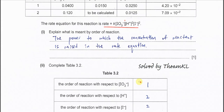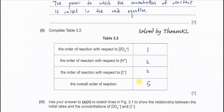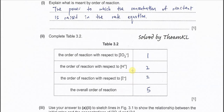Complete table 3.2: the order for iodate is first order, H⁺ is second order, and iodide is second order. The total overall order is 1 + 2 + 2 = 5.